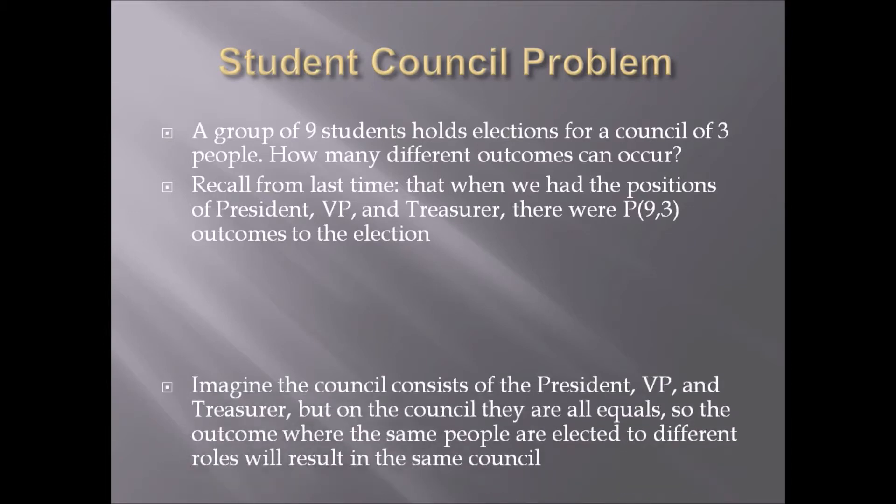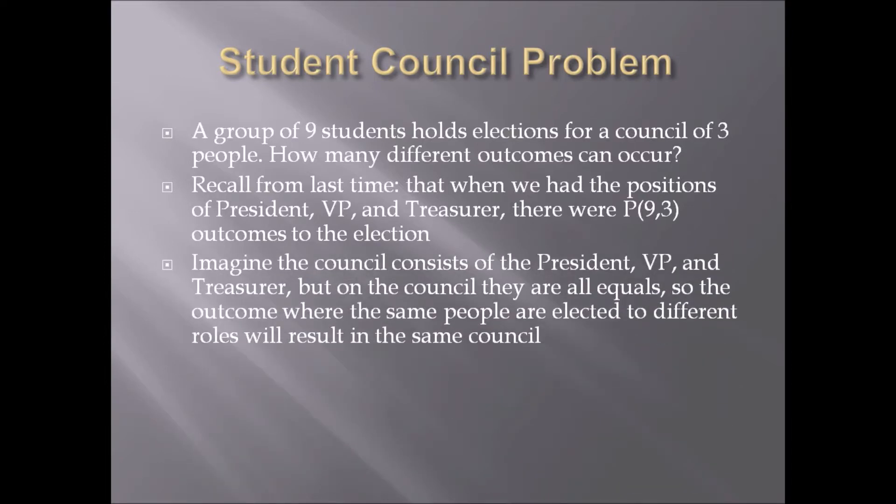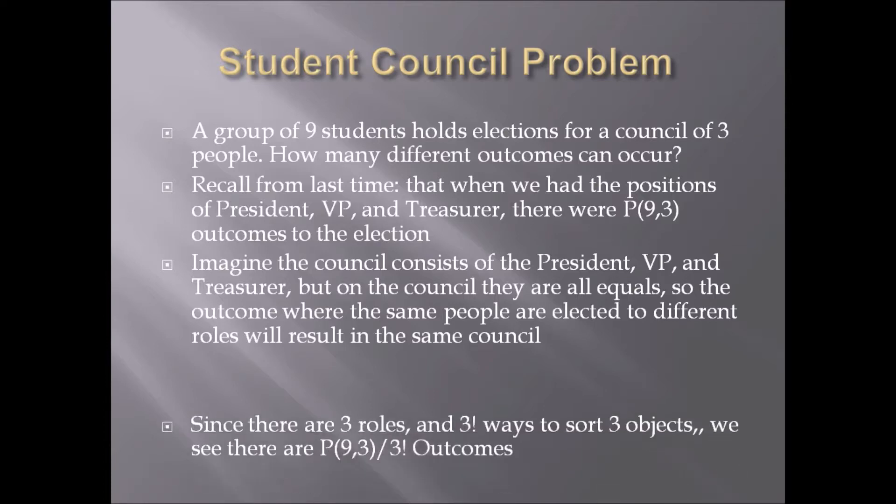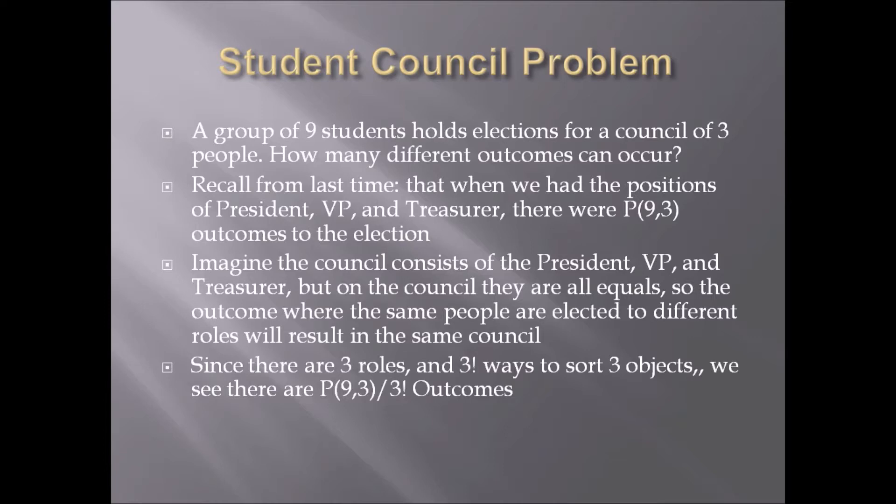So how do we account for this? Well, if you think of it, the outcomes where the same people are elected to different roles will result in the same council. And how many ways could three people be given the three roles? Well, there's 3! ways that can occur. Therefore, we see there are P(9,3) / 3! outcomes.